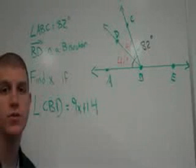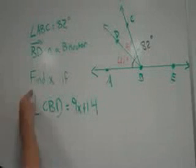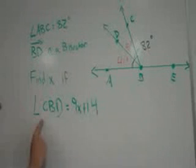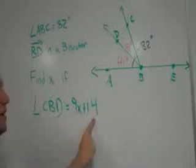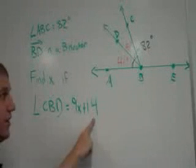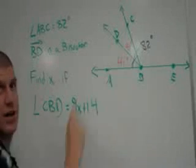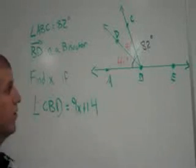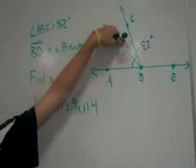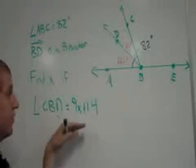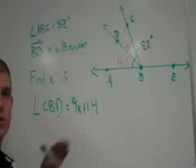And we're going to use that information to help us find x if CBD is 9x plus 14. Angle CBD is this one right here. And we know that it equals 41 degrees.